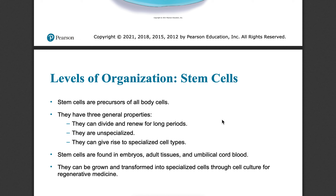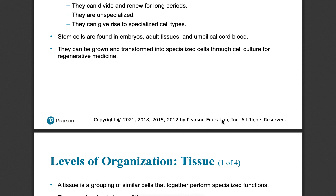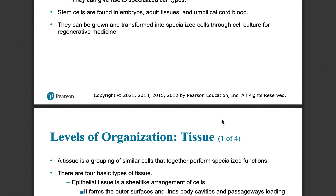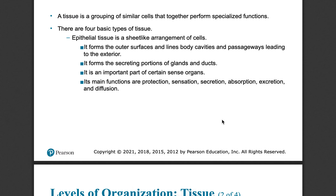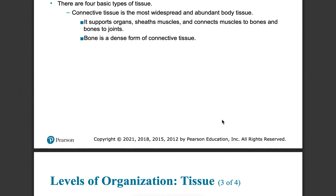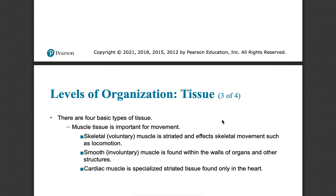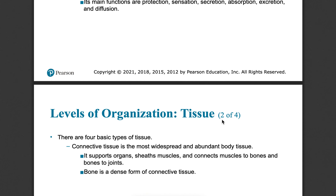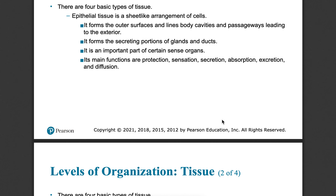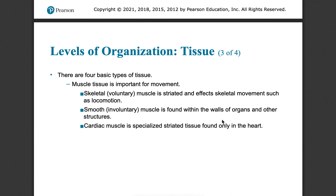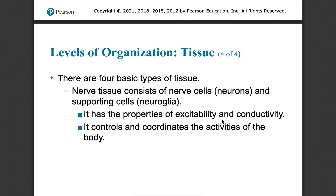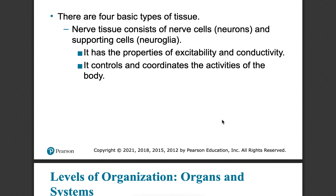Eventually, cells in our bodies group together and form tissues. We have different types of tissues — basically cells that are similar, grouped together with similar functions and roles. Types include muscle tissue, skeletal connective tissues like bones, epithelial tissue like your skin, and nerve tissue that helps conduct current and send messages.